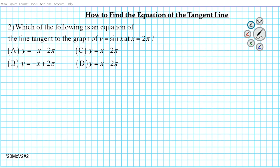For question number two, we're going to be learning how to find the equation of the tangent line. We're going to be looking at the trigonometric function in this particular example. Question two reads: which of the following is an equation of the line tangent to the graph of y equals sine x at x equals two pi?